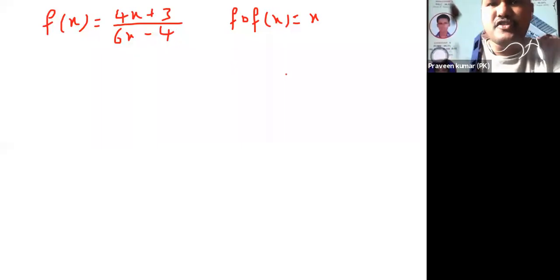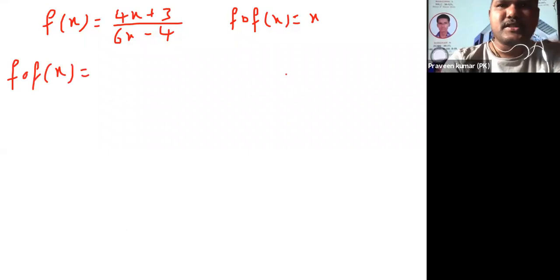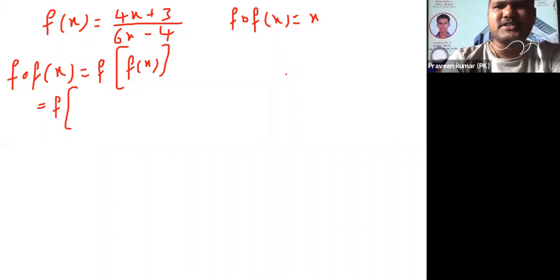f(x) means... carefully observe. You can consider f circle f of x, that is f of f of x. That is equal to f of what is f(x) value: 4x plus 3 by 6x minus 4.